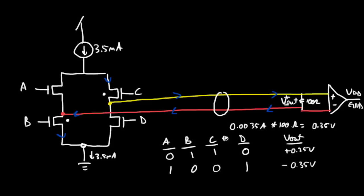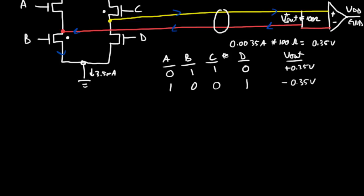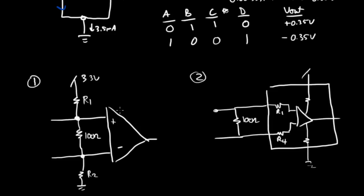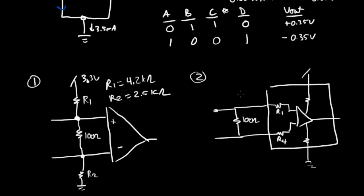We do want a failsafe, and there often will be one in case something goes wrong. There are two pretty common solutions. One uses resistances between the 3.3 volt rail and ground, where R1 is about 4.2 kilo ohms and R2 is about 2.5 kilo ohms, to pull the system up to a logic high on failure. In another solution, the resistances are integrated into the receiver package. For whatever LVDS receiver you choose, be sure to follow the datasheet and rig up the resistances appropriately.